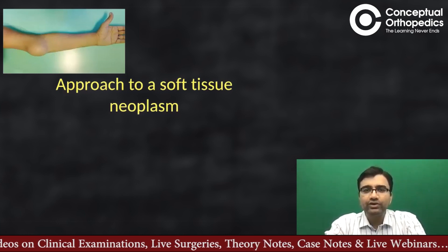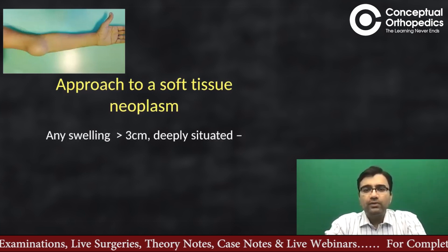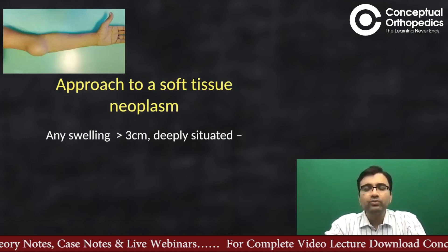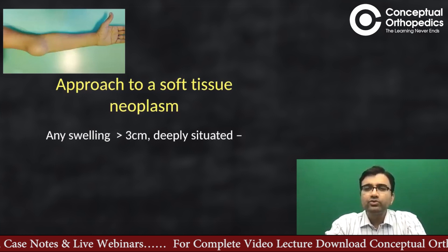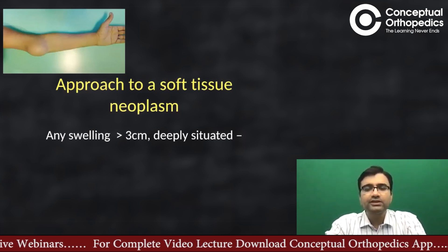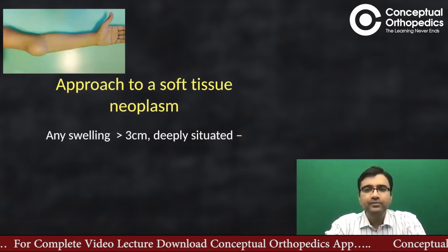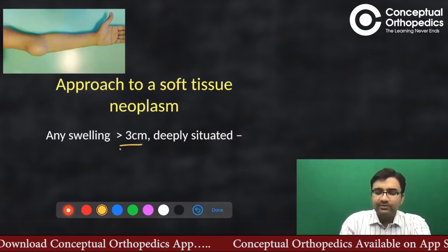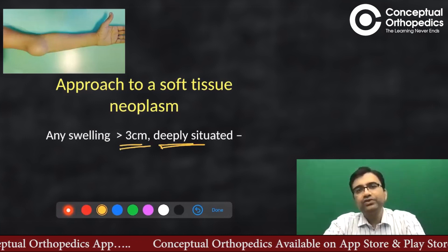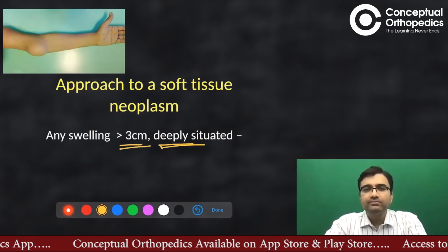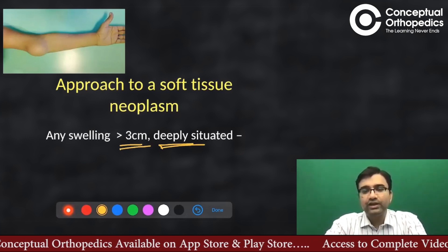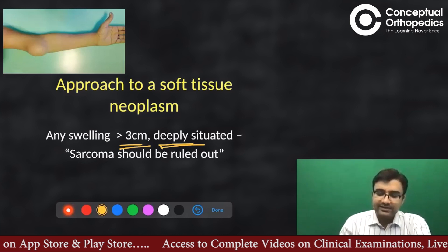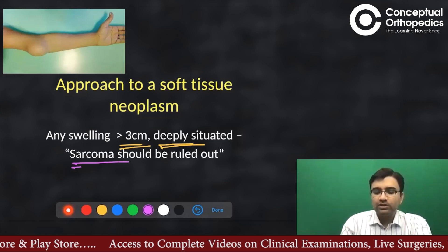Always diagnose first before you plan your treatment. A very important question is: when do you suspect a sarcoma? Normally, small tumors of one or two centimeters you think are a lipoma or cyst. But if you see any swelling more than three centimeters in size that is deeply situated — deep to the superficial fascia — you must be alert about whether it is benign or malignant, and sarcoma must be ruled out.